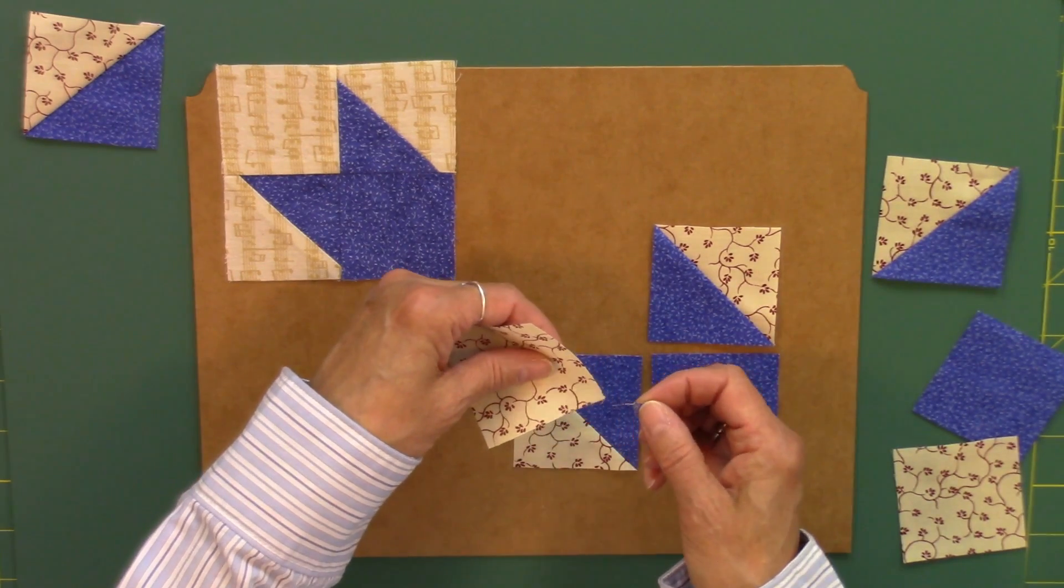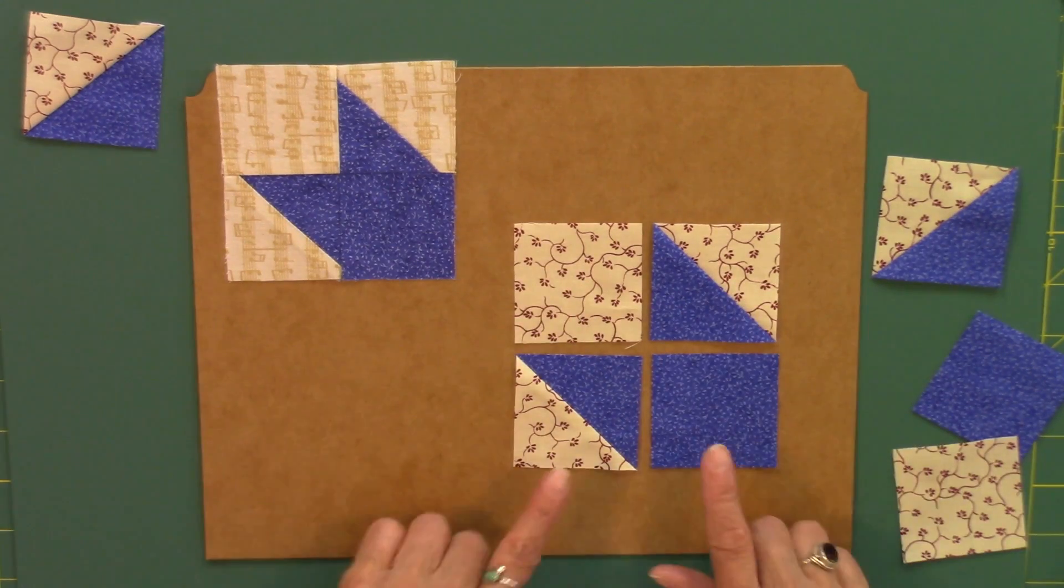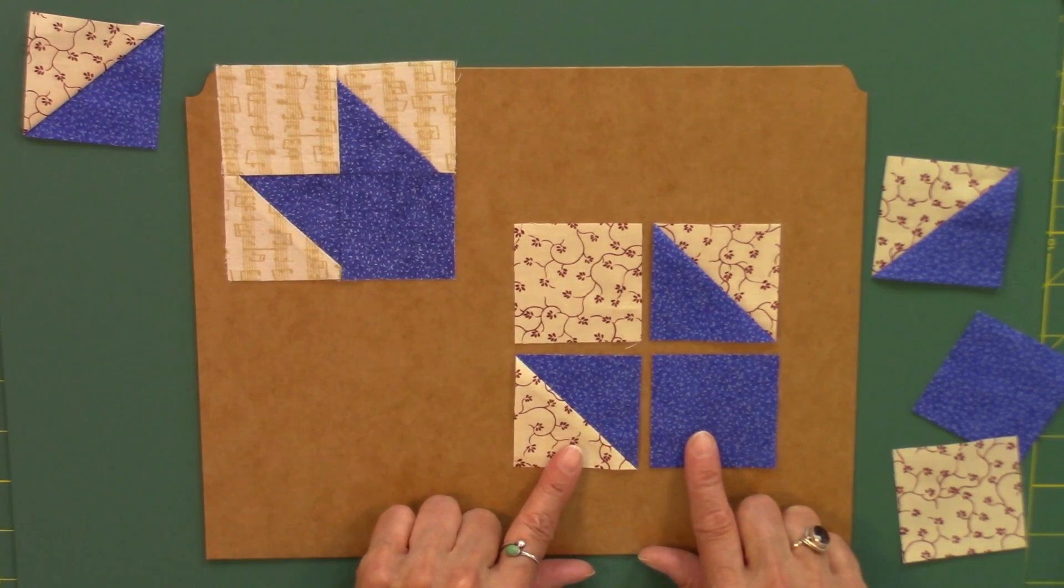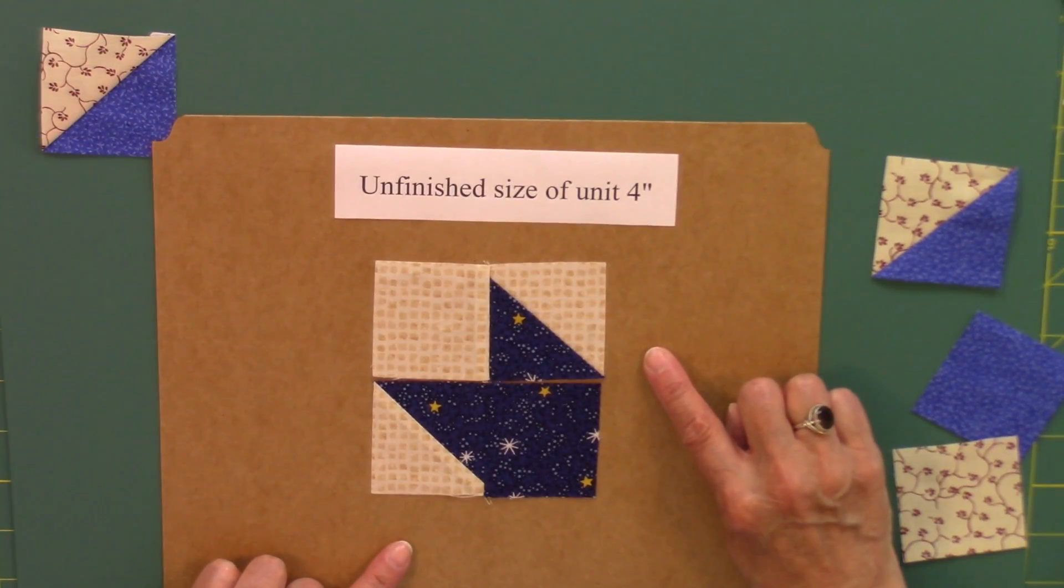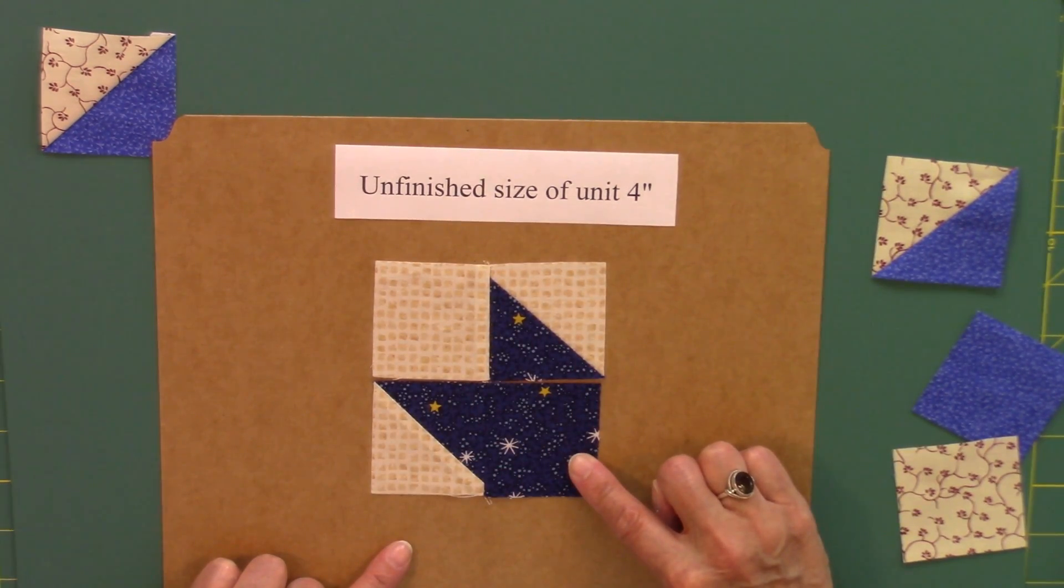And yes, every once in a while you will have one of those little triangles hanging on. Just get rid of it. This is now ready to be sewn together. So I sew the units together in rows first. This is top row, bottom row.